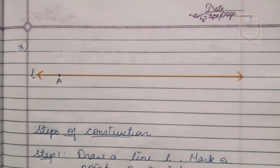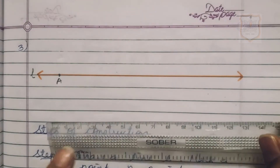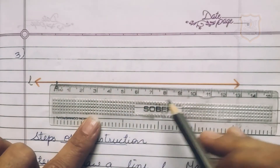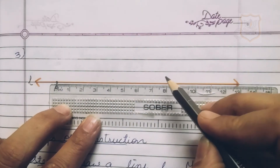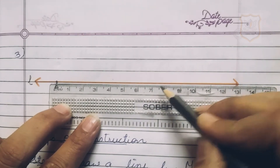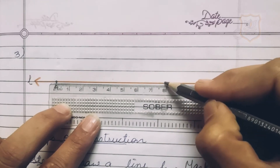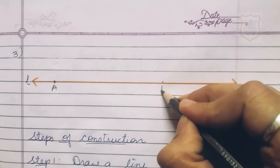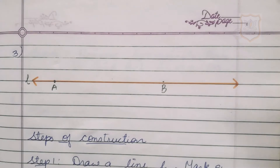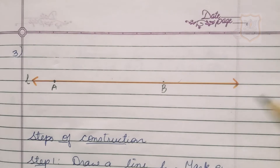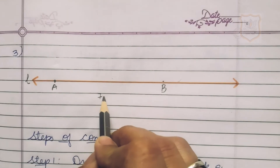Step 2: Construct line segment AB with length 7.8 centimeter using a ruler. We will place the scale at 0 centimeter at point A, and mark another point at 7.8 centimeter — counting 7.1, 7.2, 7.3, 7.4, 7.5, 7.6, 7.7, 7.8 — and name it as B. This is line segment AB of length 7.8 centimeter.